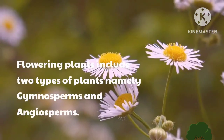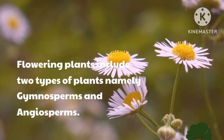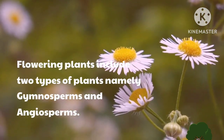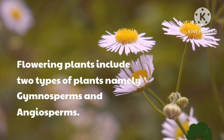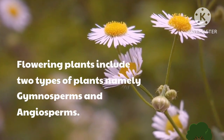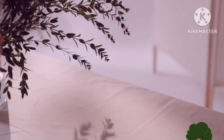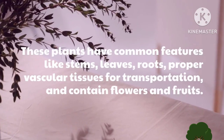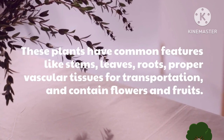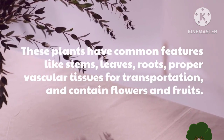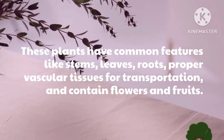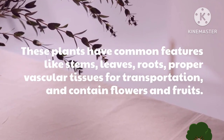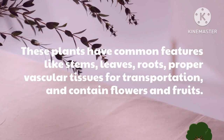Flowering plants include two types of plants, namely Gymnosperms and Angiosperms. These plants have common features like stems, leaves, roots, proper vascular tissues for transportation, and contain flowers and fruits.